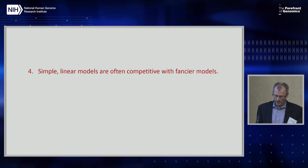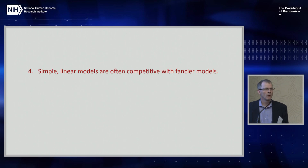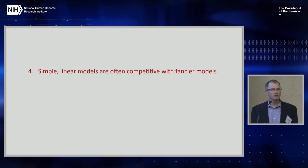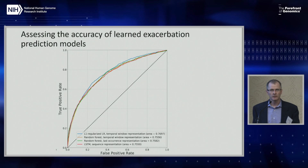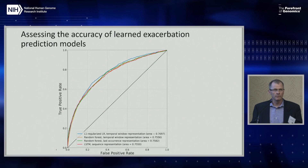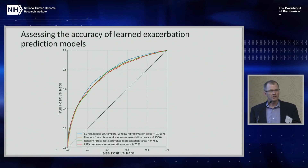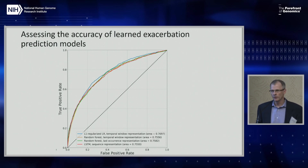Despite the activity and hype around deep learning, in many cases simple linear methods like logistic regression work really, really well. In our asthma exacerbation task, ROC curves for regularized logistic regression, two random forest models, and an LSTM deep network are all very comparable — logistic regression seems to be as good as the more sophisticated models.